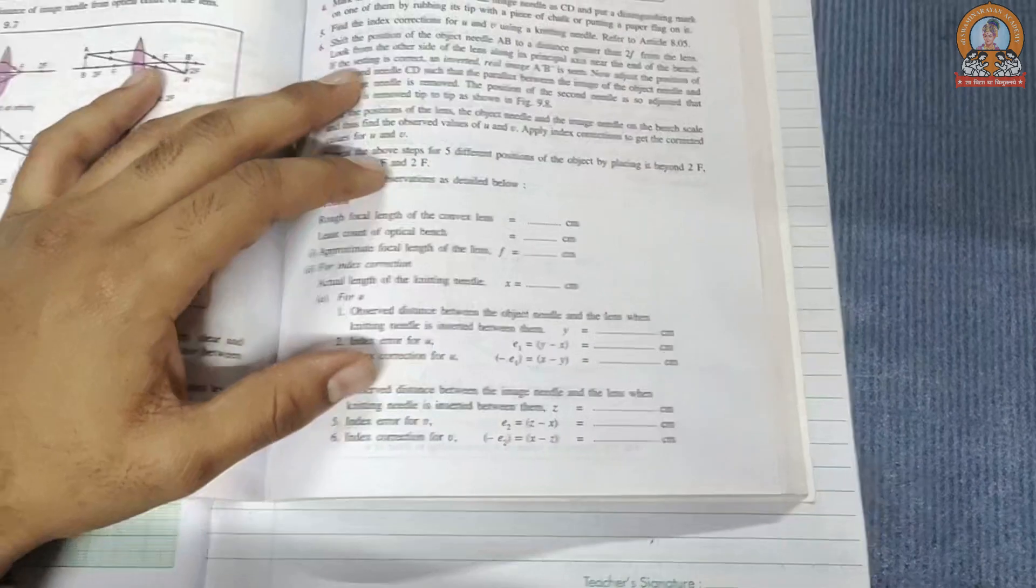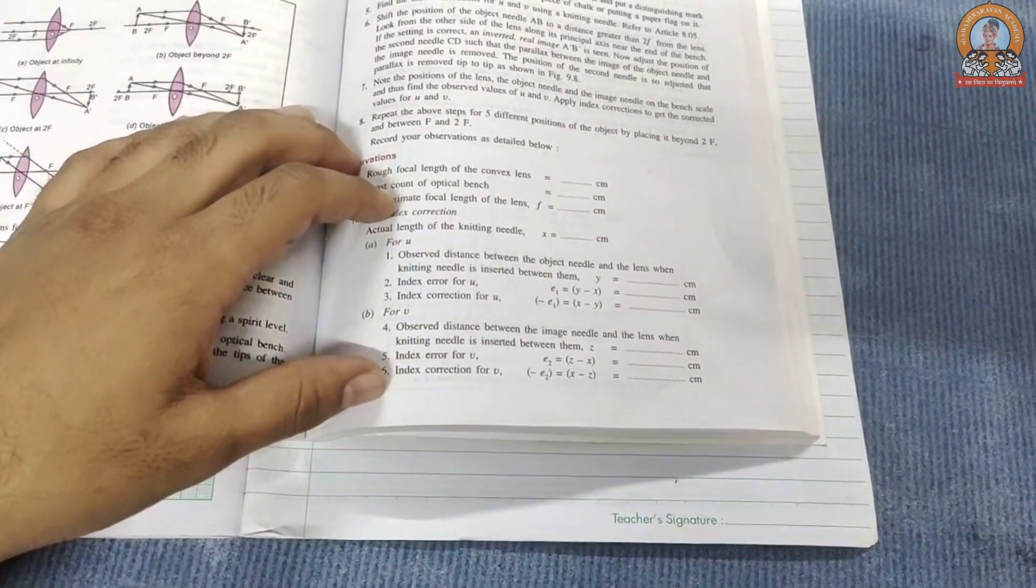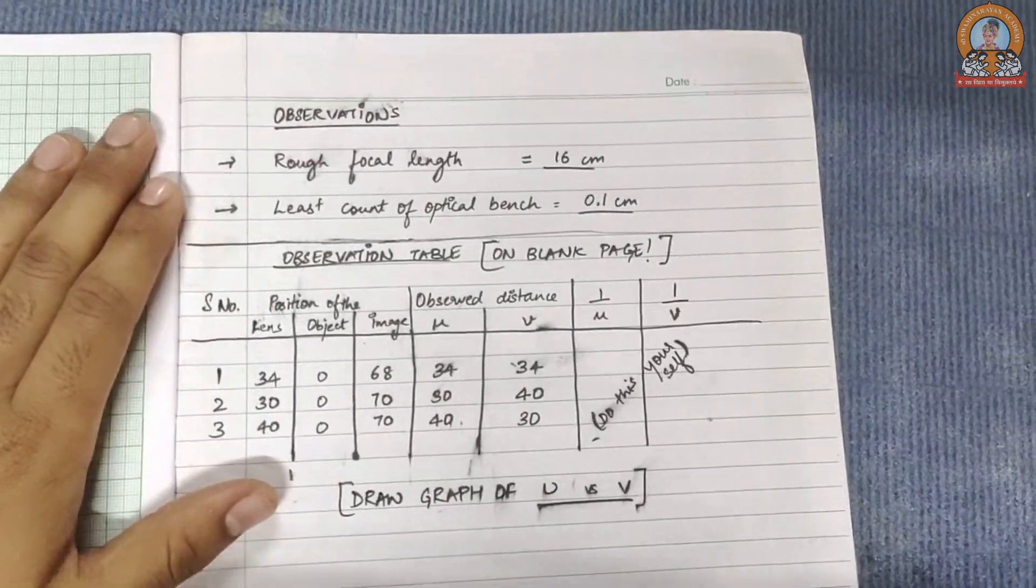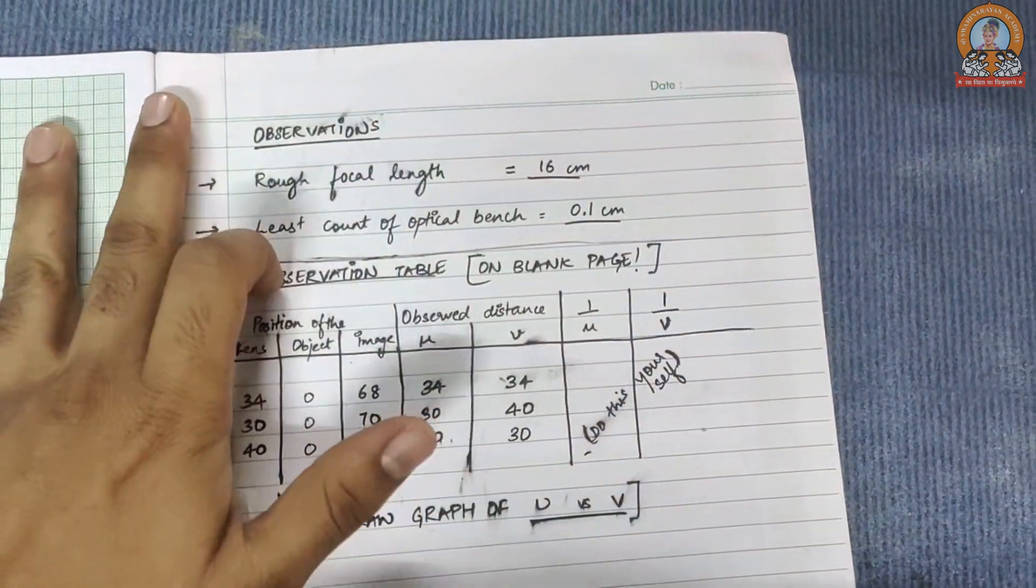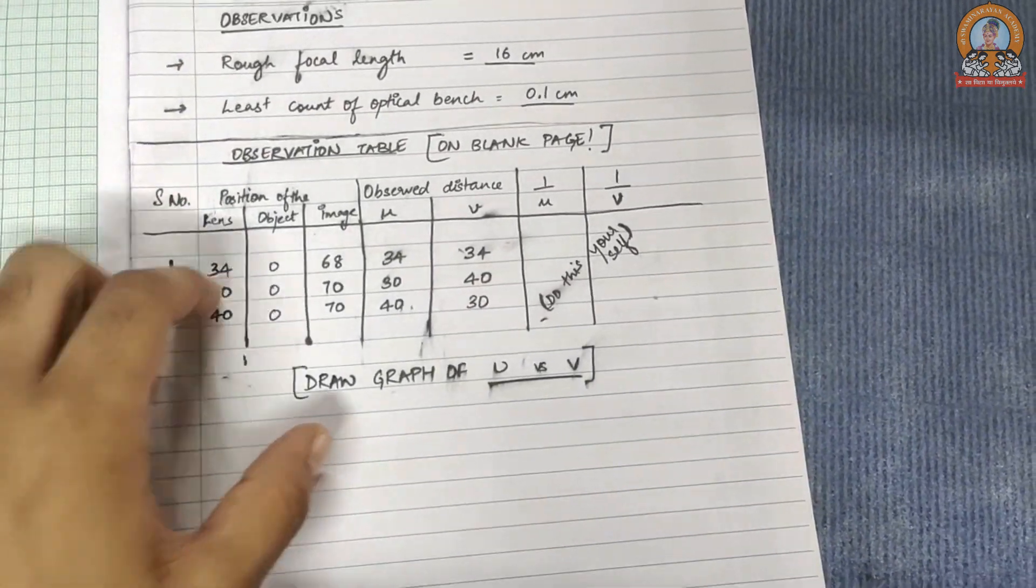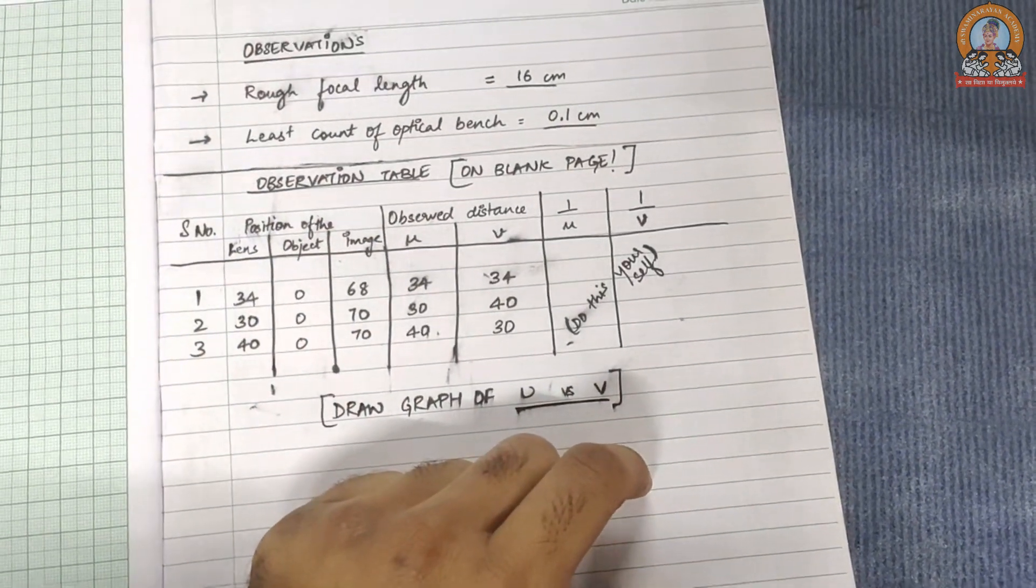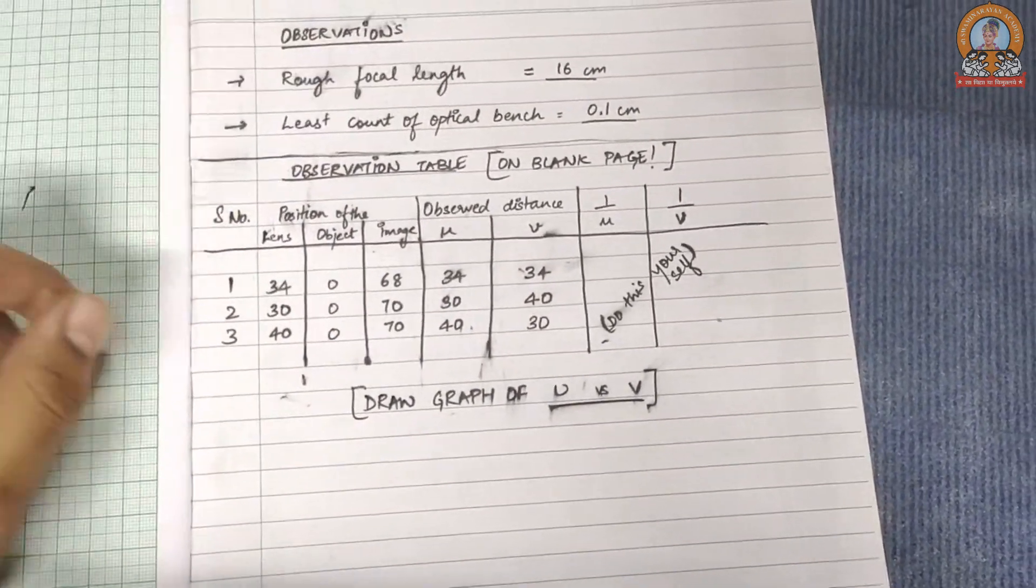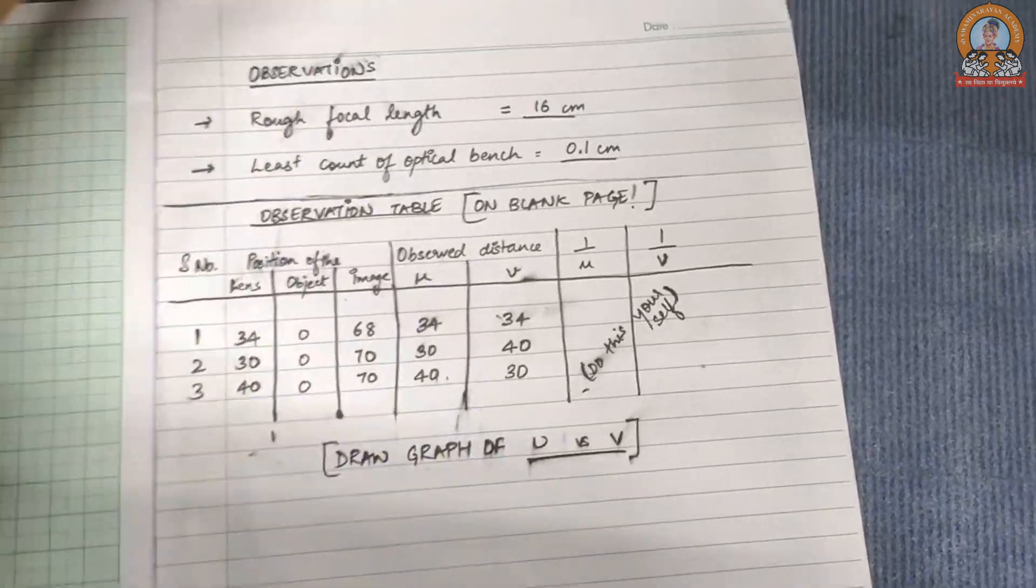Our next step will be completing the information. See, you have to write these observations, just two things, not that much. And in the observation table also, we don't have any correction in the optical bench or any other errors. So just copy it. You have to draw this graph.